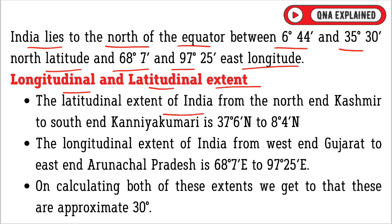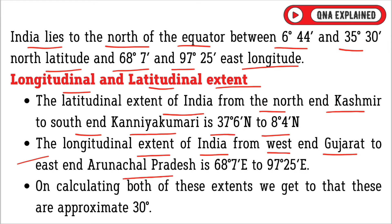The latitudinal extent of India from the north end Kashmir to the south end Kanyakumari is 37 degrees 6 minutes north to 8 degrees 4 minutes north. The longitudinal extent of India from the west end Gujarat to the east end Arunachal Pradesh is 68 degrees 7 minutes east to 97 degrees 25 minutes east.